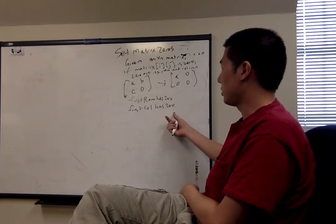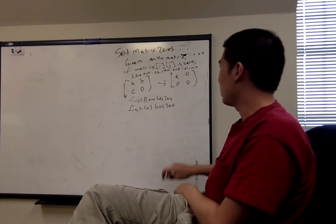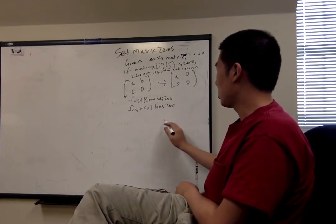Similarly, firstColumnHasZero is a Boolean that's true if and only if there's a zero in the first column. So we're going to calculate those and store them.